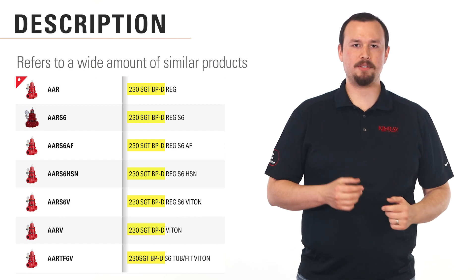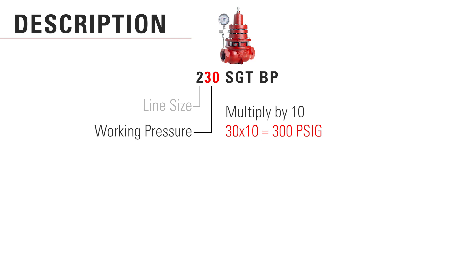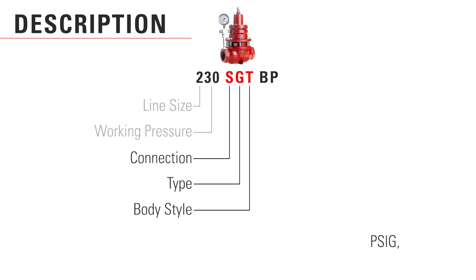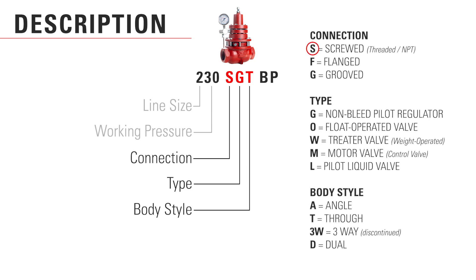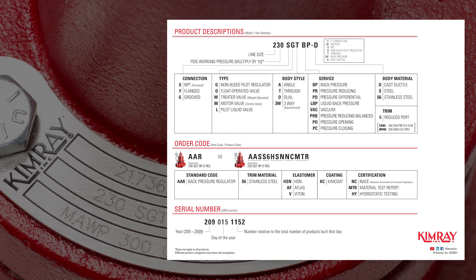Here's what the numbers and letters on this description mean. The first number is the line size — 2 inches. The second number can usually be multiplied by 10 to get the working pressure of the product. In our example of the 230, this would be 300 pounds per square inch. There are a few exceptions to this rule, like our weight-operated valves. The next three letters tell us the connection type and body style — in this case, screwed, non-bleed pilot regulator, and through body. The last letters tell us the service the product is used for, which in this case would be back pressure. You can download this reference chart to help identify different product descriptions.